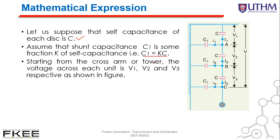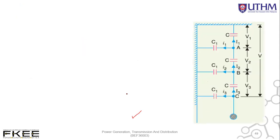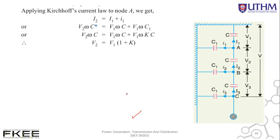Starting from the cross arm or tower, the voltage across each unit is V1, V2, and V3. Applying KCL at node A: I2 = I1 + I1 (current into C1), giving V2·ωC = V1·ωC + V1·ωC1. Since C1 = KC, we simplify to get the first equation: V2 = V1(1 + K).